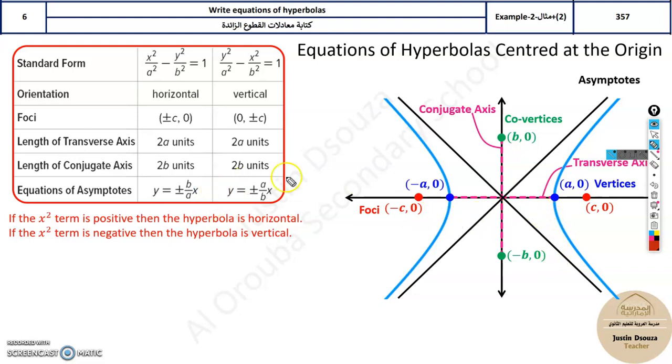There is one more important thing: the orientation. You can see whenever x² by a² is positive, it's horizontal orientation. Whereas when it's negative x² by a² and y² by a² is positive, it's vertical orientation.